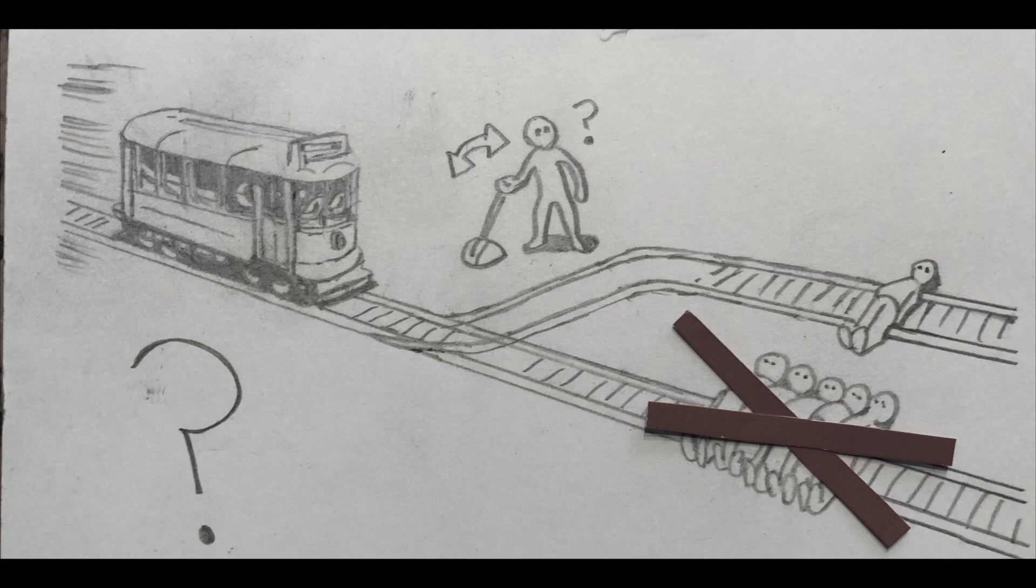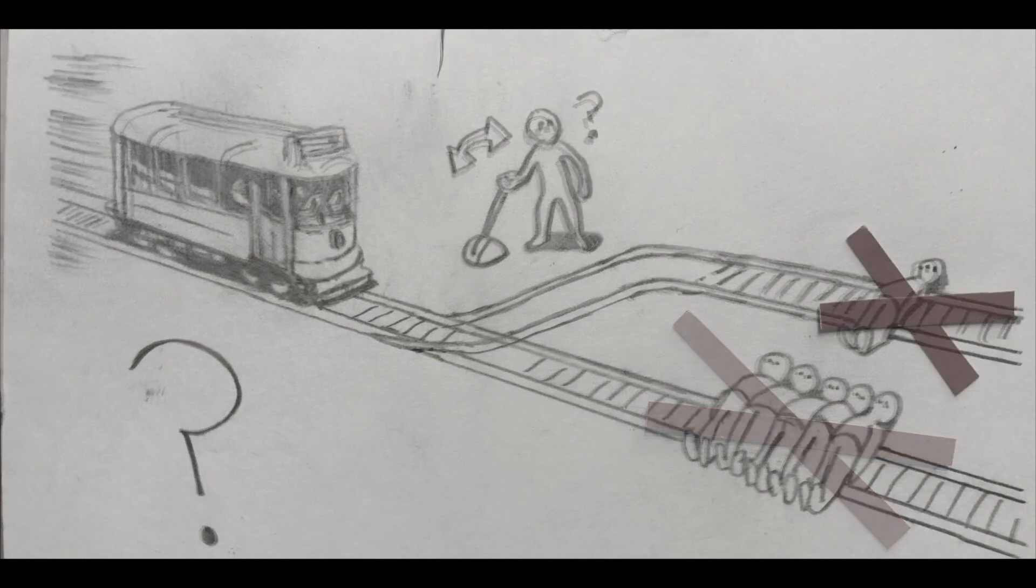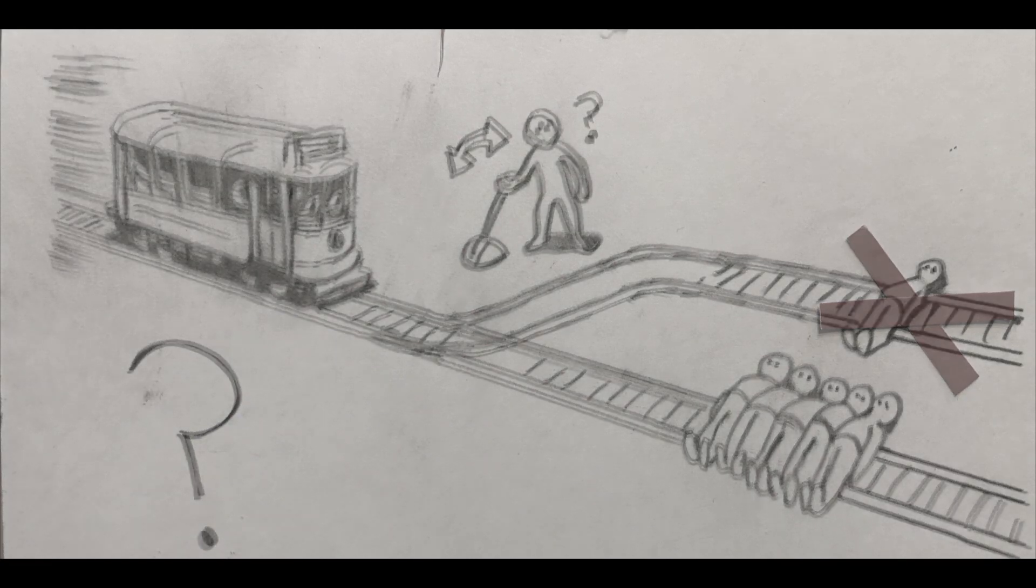2. Pull the lever, diverting the trolley onto the side track where it will kill one person. What is the right thing to do?